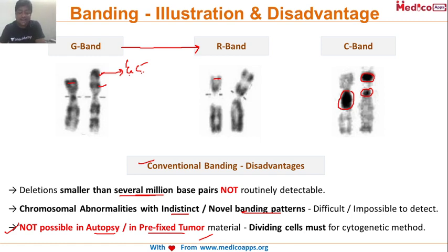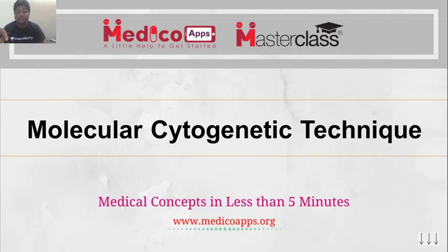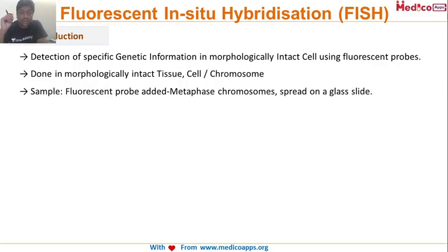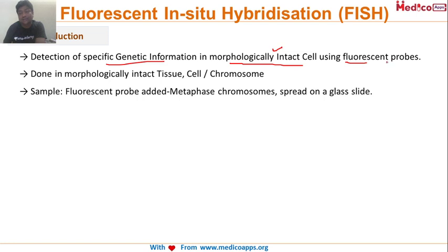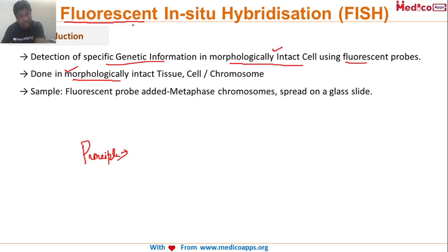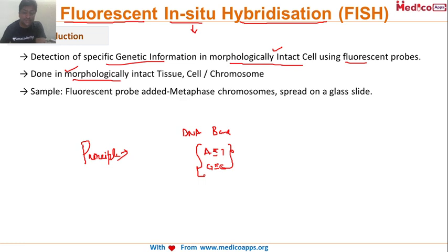Now we are in a position to understand FISH — Fluorescent In-Situ Hybridization. It is the detection of specific genetic information in morphologically intact cells using fluorescent probes. Breaking down the name: fluorescent refers to a fluorescent probe; in situ means inside an intact cell; and hybridization means DNA base pairing — A pairs with T, G pairs with C.